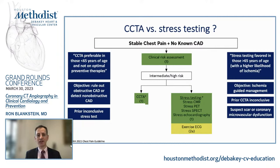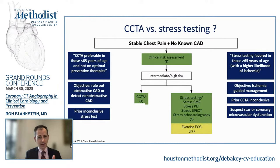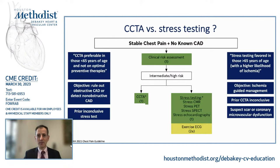You also have to think about the objective of the test. If the objective is to rule out obstructive disease or identify non-obstructive plaque, CTA is preferred. If the objective is ischemia-guided management — to see how much ischemia individuals have — a stress test would be preferred. Always consider prior test results: if a stress test was non-diagnostic, coronary CTA would be better next time, and vice versa.